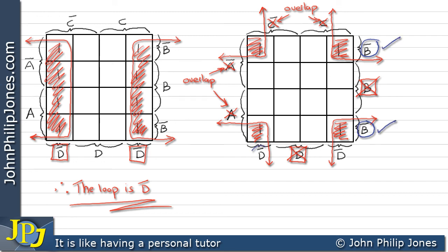Now, it's clear that the shaded area is both in the not B and the not D. Therefore, the loop is not B and not D. And this is because the edges of the Karnaugh map connect as we showed in the last video.